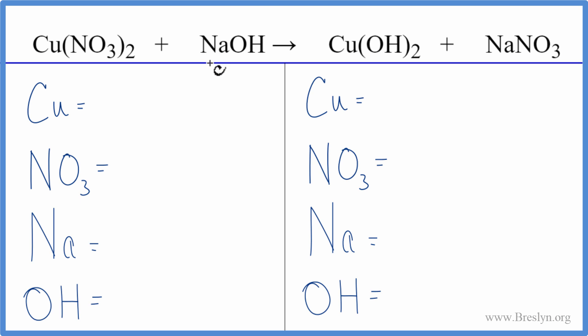And with double displacement reactions, there's a little trick we can use when we have these polyatomic ions. We have the nitrate here, this NO3. It's a polyatomic ion. It stays together. You have a nitrate here and one here. So we count this as just one item.